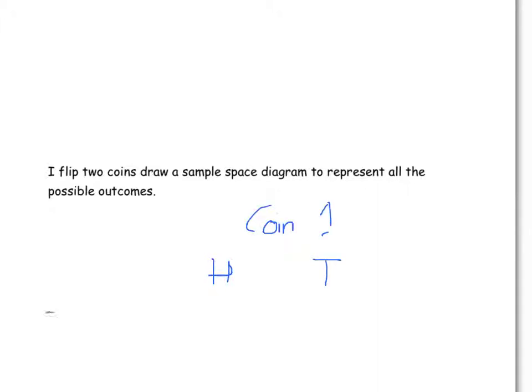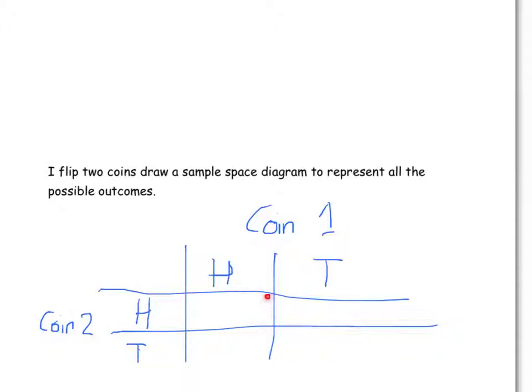On the second coin, I could either get a head or a tail. So in this box here, what must I have got from coin one? I'll have got a head, and from coin two I'd also got a head.